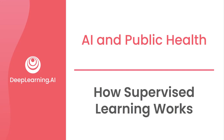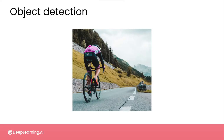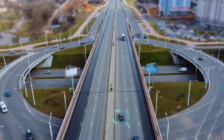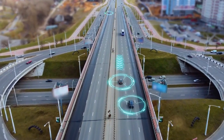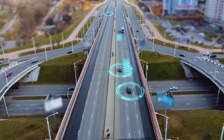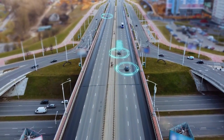In order to better understand how an algorithm can learn from data, let's take a look at an example of recognizing what's in an image. If I show you this image, for example, you're able to immediately recognize that it's a picture of a cyclist on the road. It turns out that being able to identify cyclists, as well as other things like pedestrians and lane markings on the road, is an important problem for self-driving cars.